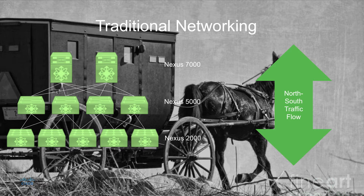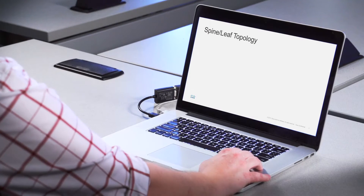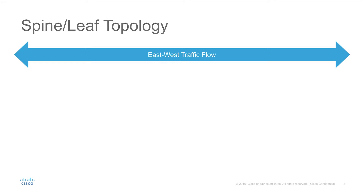Now with the popularization of virtualization, and even more recently containers and microservices and big data, most of our traffic is actually contained within the data center. We refer to this type of traffic flow as being east-west. Not only is the traffic flow different, there's just more data traffic in our data centers now than there used to be, and we need a new networking topology that can handle that.